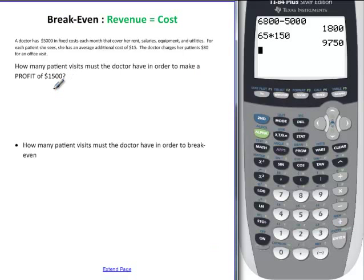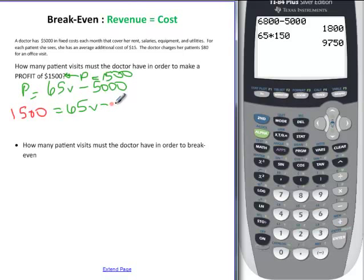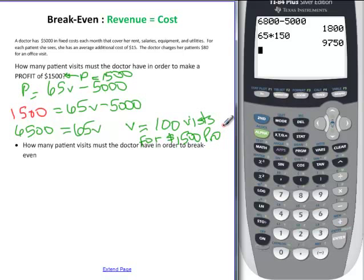So how many patient visits must the doctor have in order to make a profit of 1,500? Okay, so profit, we said, was equal to 65V minus 5,000. And now we know that P is equal to 1,500. So we're going to have 1,500 is equal to 65V minus 5,000. And if we add 5,000 to both sides, this will be 6,500 is equal to 65V. And if we divide by 65, that will give us 100. So that would be 100 visits for a profit of $1,500.